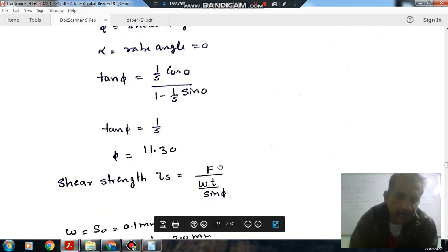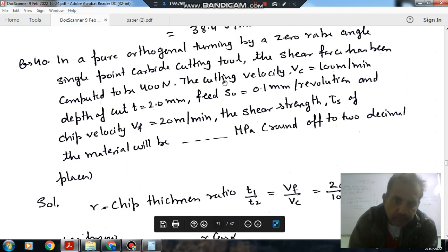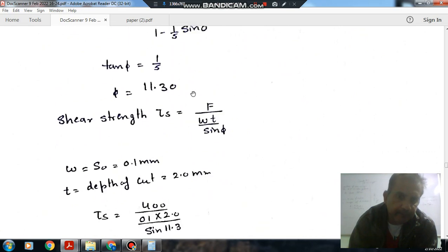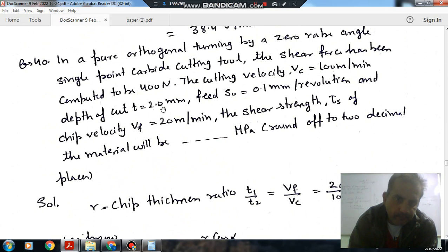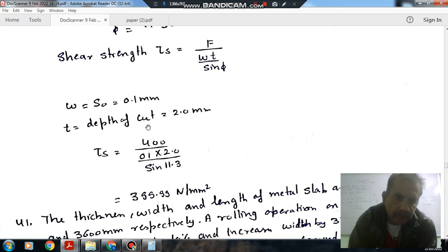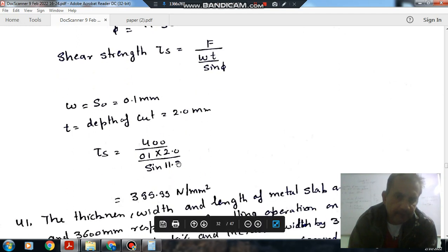Shear stress is shear force divided by shear area, which is W times T divided by sin phi. F is shear force which is 400N. W is 0.1mm and T is 2mm. Calculating this gives us the shear strength.